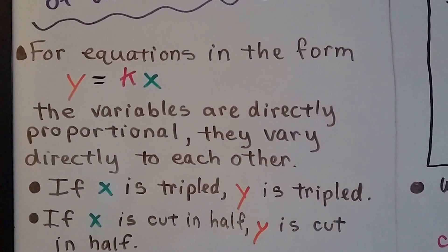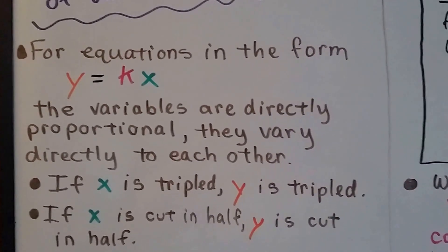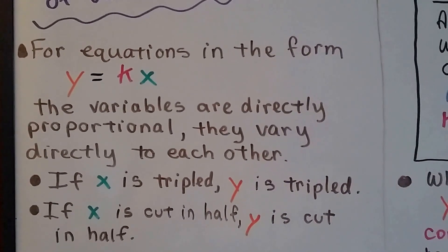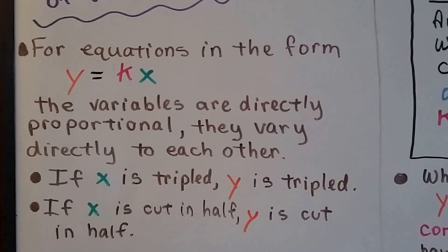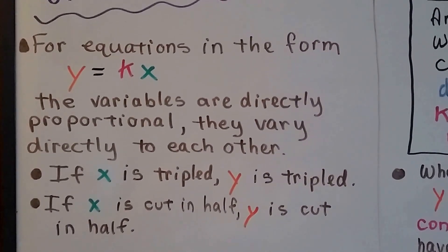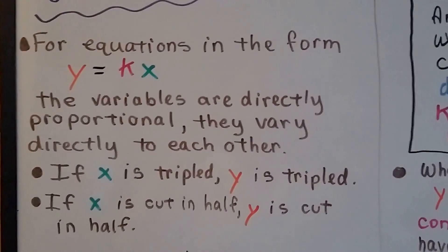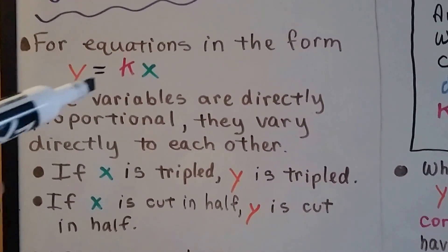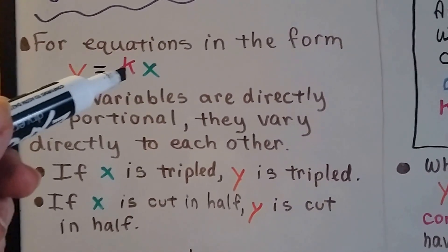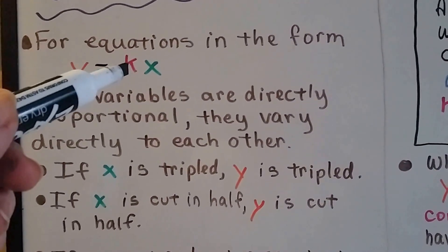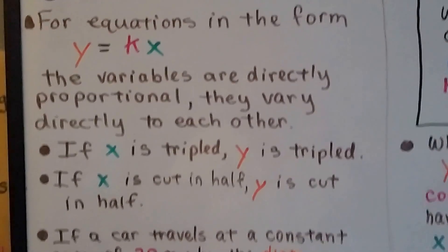If x is tripled, then y is tripled. And if x is cut in half, y is cut in half. And that k is going to stay the same number — it's going to stay a constant number.